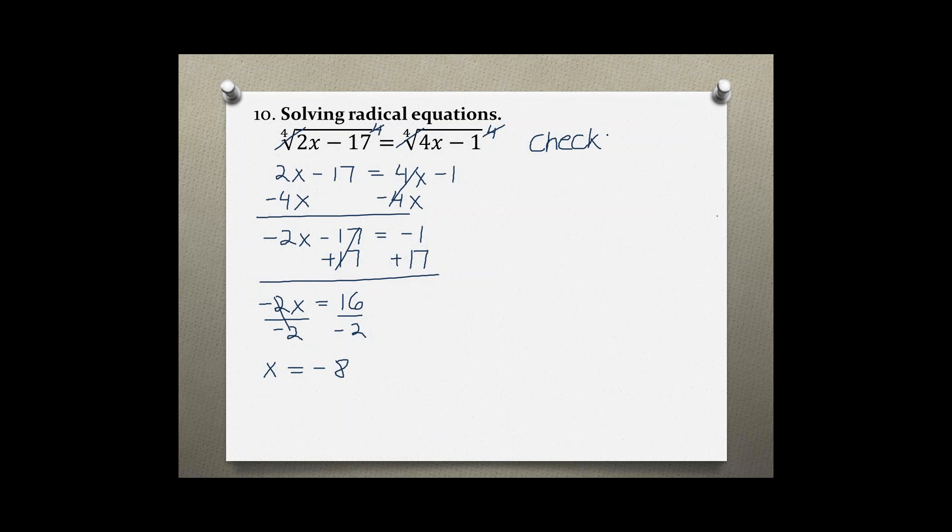We have to check if our solution is valid by plugging it back into the original problem. The 4th root of 2 times negative 8 minus 17 should equal the 4th root of 4 times negative 8 minus 1. 2 times negative 8 is negative 16 minus 17, and on the right side we have negative 32 minus 1.